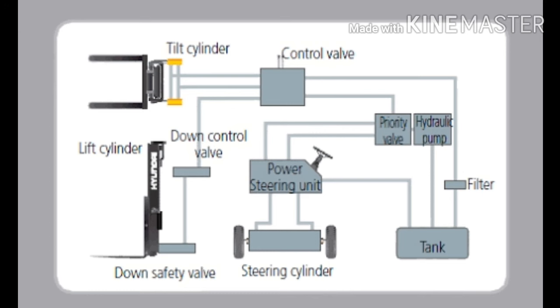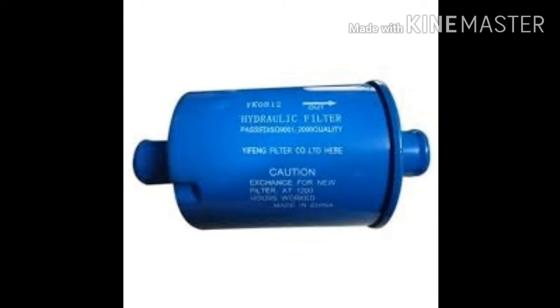Hydraulic lines are used to flow the fluid from the hydraulic tank to the control valve and to the cylinders. The return line completes the cycle of forklift hydraulics. The hydraulic filter is used in the system for oil filtration.